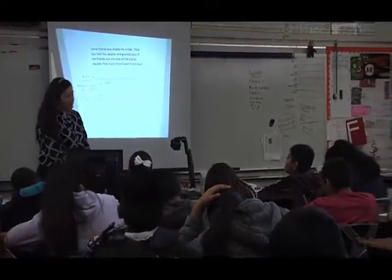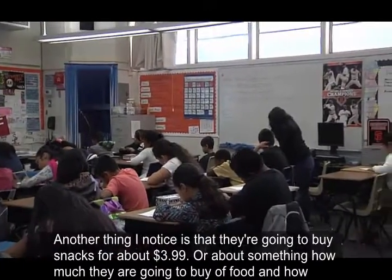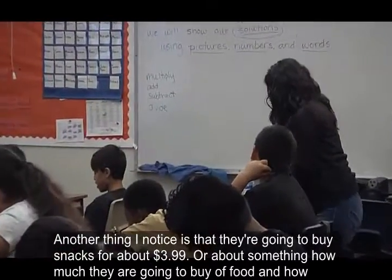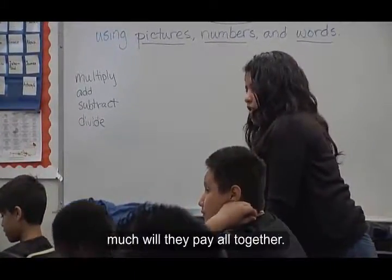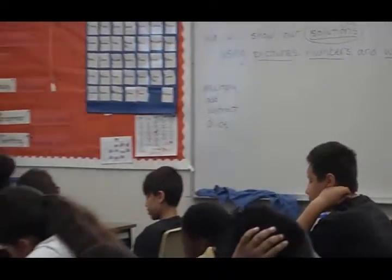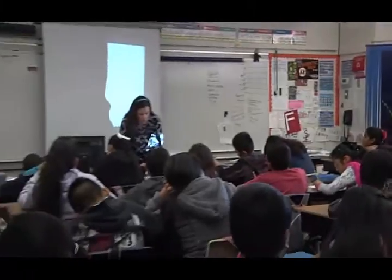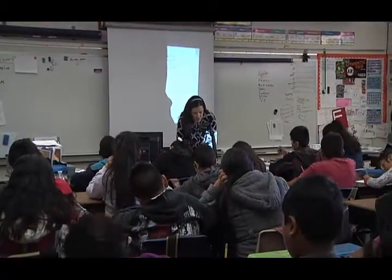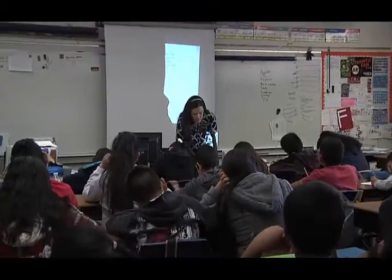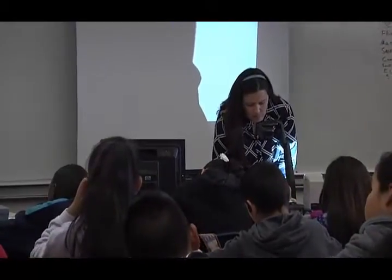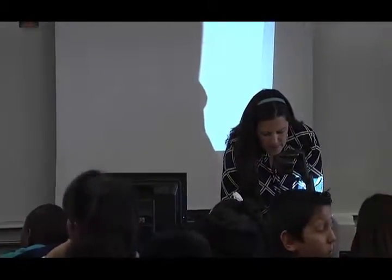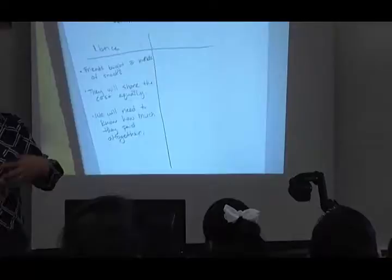Another thing I noticed is that maybe they're going to buy snacks for a certain price, and how much they're going to buy food and how much they pay altogether. So we are going to need to know how much they pay altogether. It's kind of like there's a hidden question in this word problem — we won't know how they split it equally unless we know how much everything cost.